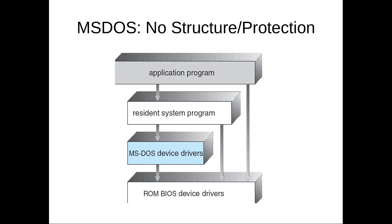Let's start with the trivial system. MS-DOS, or FreeDOS, and many small embedded real-time operating systems nowadays that control the physical world, they effectively have no structure whatsoever. You have your application, the operating system — which for DOS was a resident system program — device drivers, and then the actual firmware and hardware. All of that was in the kernel. There was no user-level computation, therefore there's no isolation, and it's effectively no structure whatsoever. The plus side is that communication is function calls all around, so it's very, very fast.